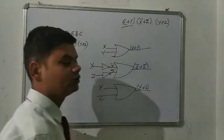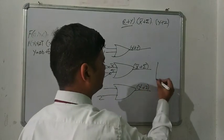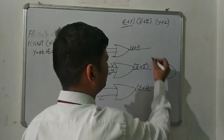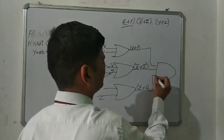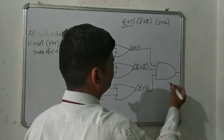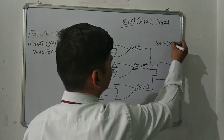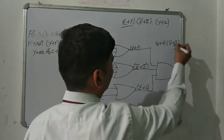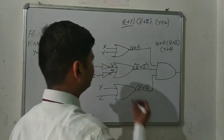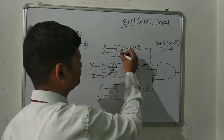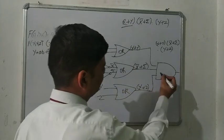Now we have to merge them. The DOT symbol means we use the AND gate. So we draw the AND gate and enter all three inputs. The final output is (X + Y) · (X̄ + Z̄) · (Y + Z). This is the final output — OR gate, again OR gate, again OR gate, then the AND gate.